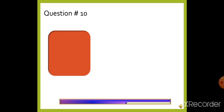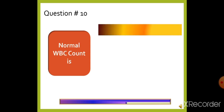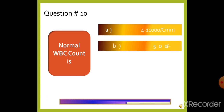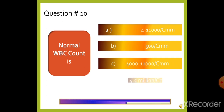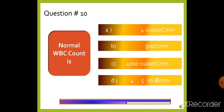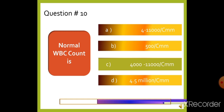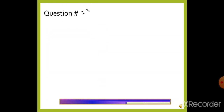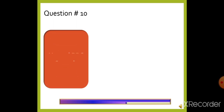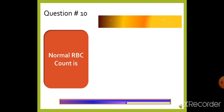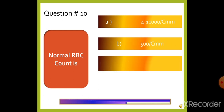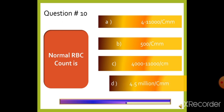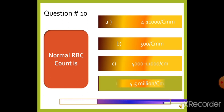Question 10: Normal WBC count is — option A: 4 to 11,000 per cmm, option B: 500 per cmm, option C: 4,000 to 11,000 per cmm, or option D: 4.5 million per cmm. The right answer is option C, 4,000 to 11,000 per cmm. Normal RBC count is 4.5 million per cmm, which is option D.